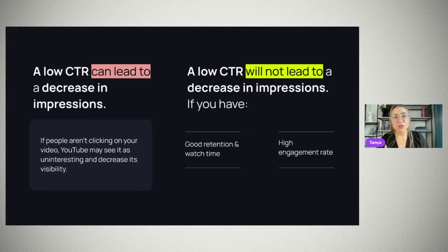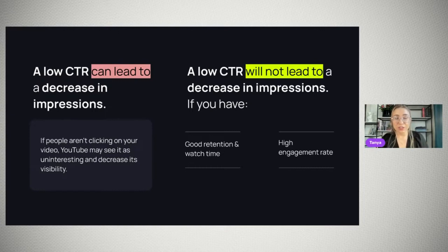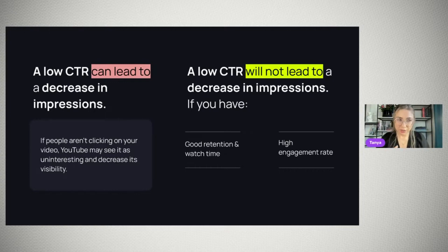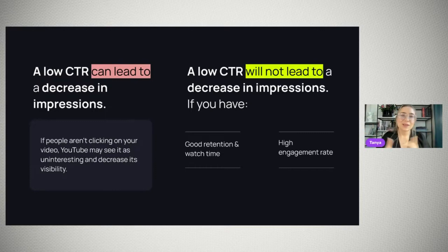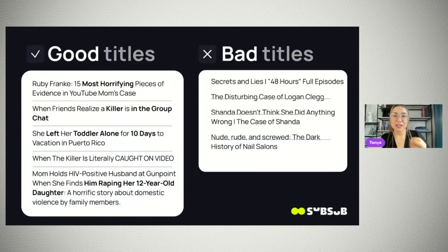For thumbnails in the true crime niche, viewers prefer authentic footage from the crime scene — body cam footage, surveillance camera footage — which immediately immerses them in the story. The true crime niche isn't about classic visual beauty; it's about showcasing snippets of the crime as it happened, which may not always be aesthetically pleasing in the traditional sense. In this case, the worse the visual, the better.